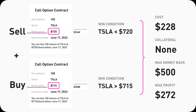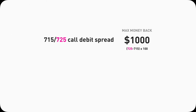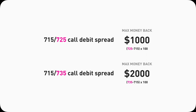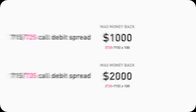But you can still capture the upside without spending a crazy amount of money. It only costs you $228, and you can get $500 back, profiting $272 in 2 weeks. The max money you can get back from a $715/$725 call debit spread is $1,000. For a $715/$735 call debit spread it is $2,000. See the pattern? It's always the difference between the 2 strike prices times 100.